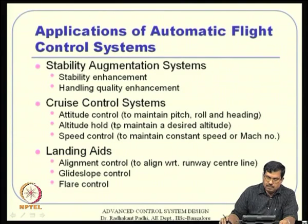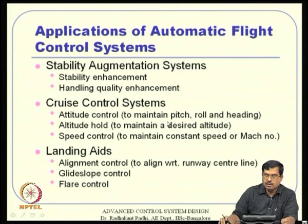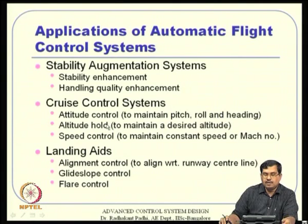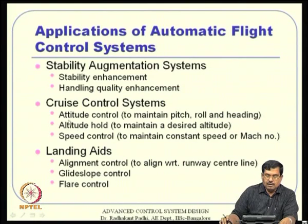Cruise control comes in various forms. First, attitude control maintains pitch, roll, and heading angles. For example, maintaining a certain pitch angle theta causes the aircraft to climb. Then there is altitude hold, used in long-duration cruise: you climb to a certain altitude like 10–12 km and then hold that altitude and heading. Combining attitude control and altitude hold gives a complete cruise control system where the automatic control takes over from the pilot.